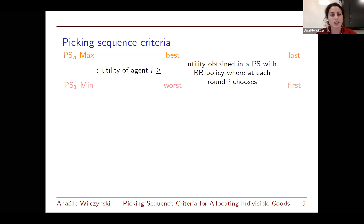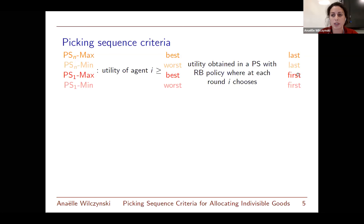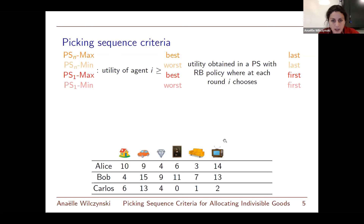An example sequence like Alice, Alice, Alice, Bob would give Alice the first three picks before Bob can take anything, which isn't very fair since Alice chooses three times before Bob chooses once. We focus instead on recursively balanced policies, where the sequence is divided into rounds where every agent appears exactly once in each round.